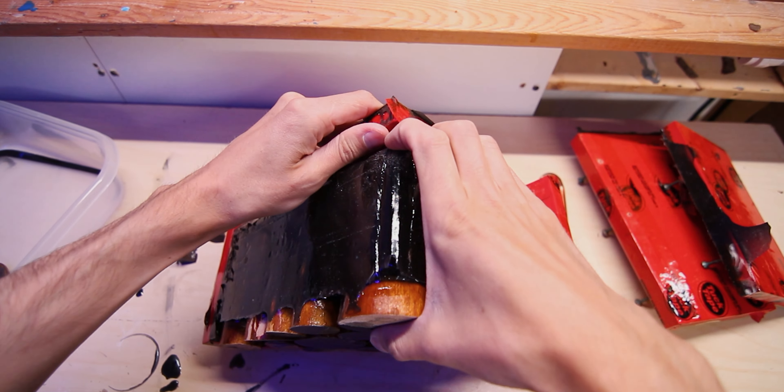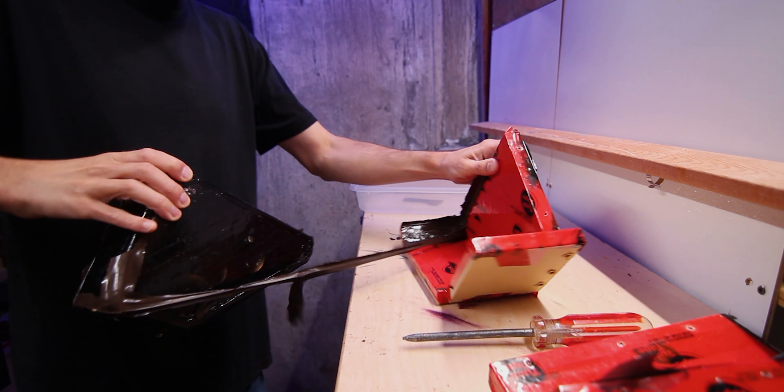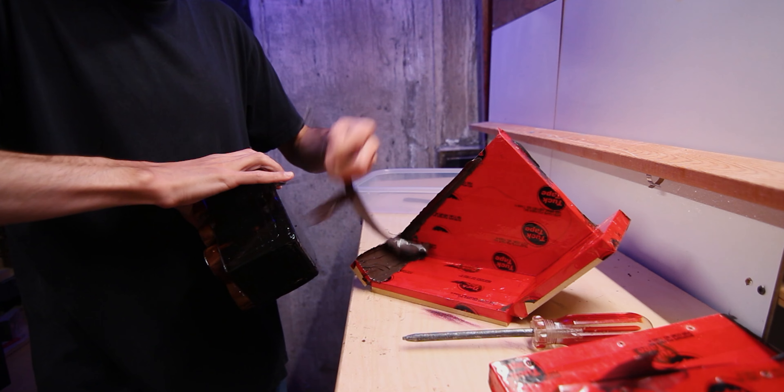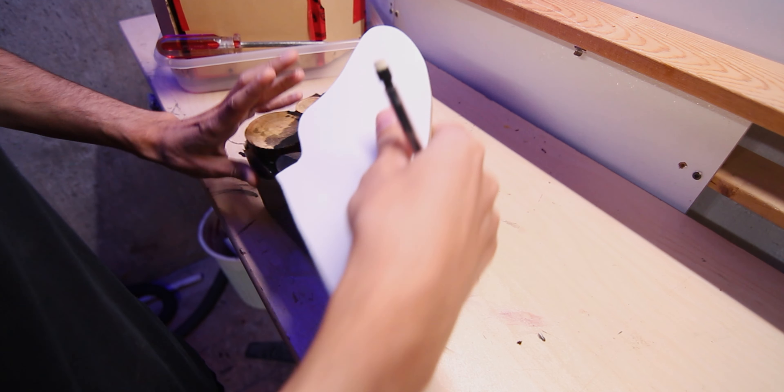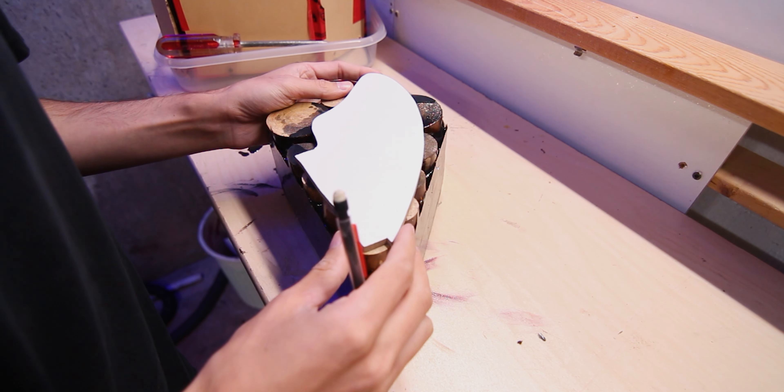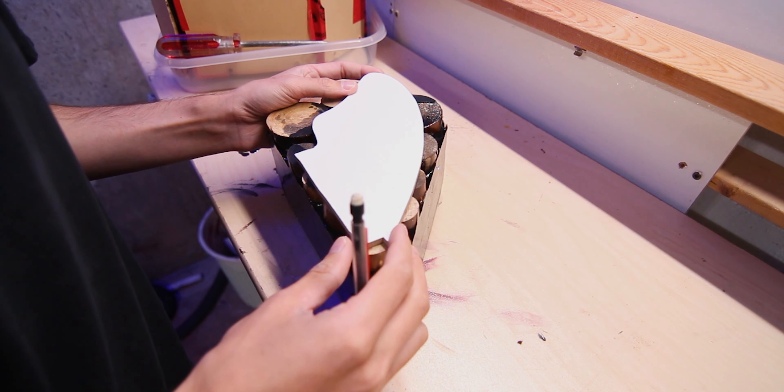Once the resin was poured, I place the mold in a container to catch any leaks. After the resin cured for roughly a week, I'll take the mold apart, being careful not to damage it so I can reuse it in the future.